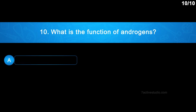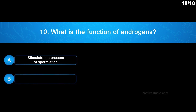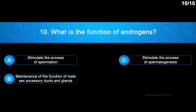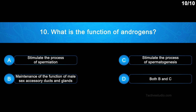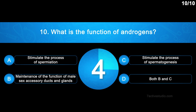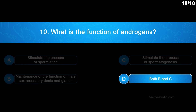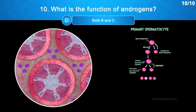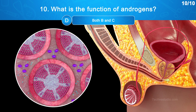Question 10: What is the function of androgens? Option A: Stimulate the process of spermiation. Option B: Maintenance of the function of male sex accessory ducts and glands. Option C: Stimulate the process of spermiogenesis. Option D: Both B and C. The correct answer is Option D — both B and C. Androgens stimulate the process of spermiogenesis and maintain the function of male sex accessory ducts and glands.